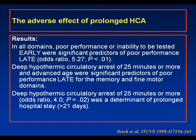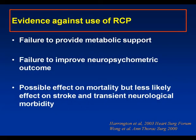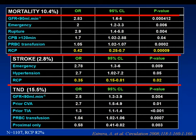Briefly on retrograde cerebral perfusion: we know now that it cannot be used without deep hypothermia, that generally it fails to provide metabolic support, and it fails to improve neuropsychometric outcome. There is a possible effect on mortality and perhaps some effect on stroke in some series, but it has little effect on transient neurological deficits. The Houston group of Safi, the one large center continuing to use RCP, demonstrated a significant reduction in mortality risk and stroke risk, but no effect on transient neurological deficit risk.